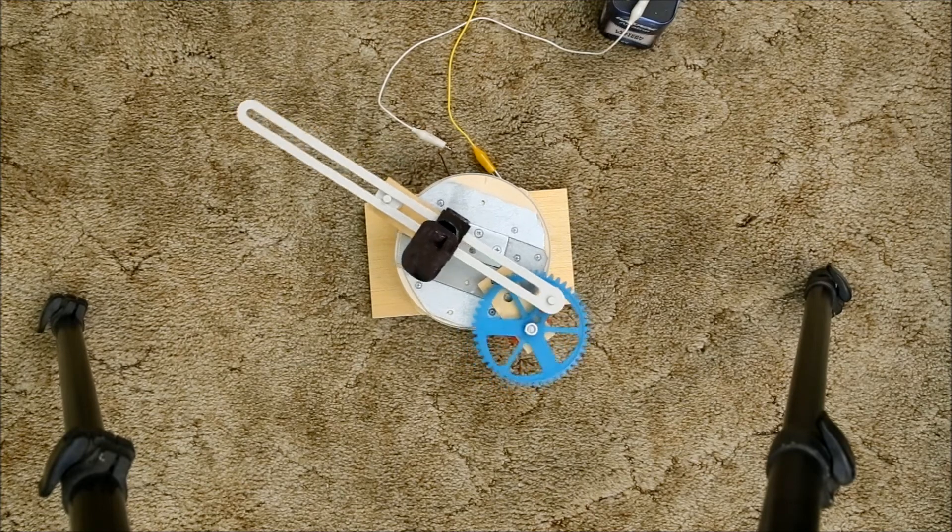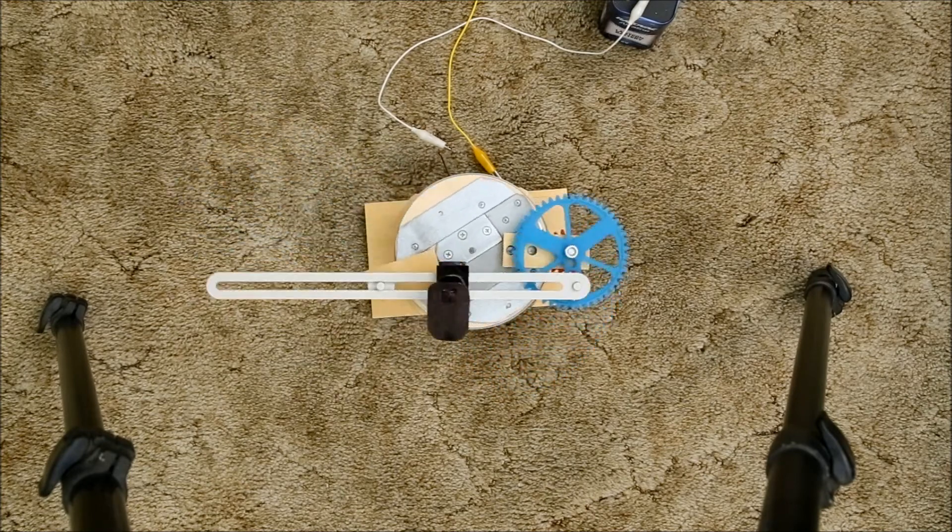First up, we'll look at this single gear fixed pivot configuration. Here's what it looks like in operation. Next, we'll freeze the shutter open and see what a whole trace looks like.